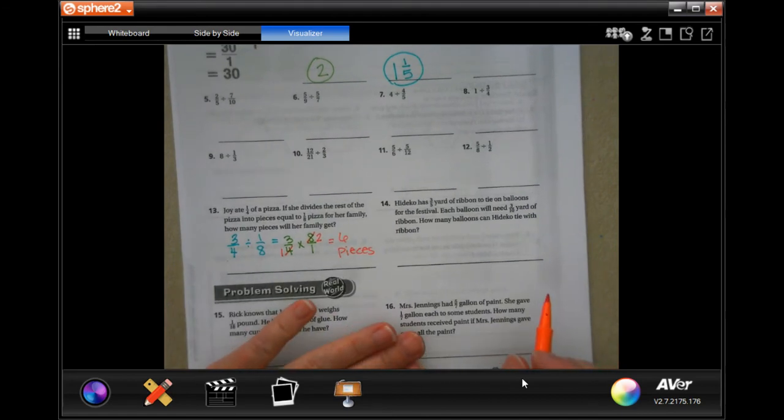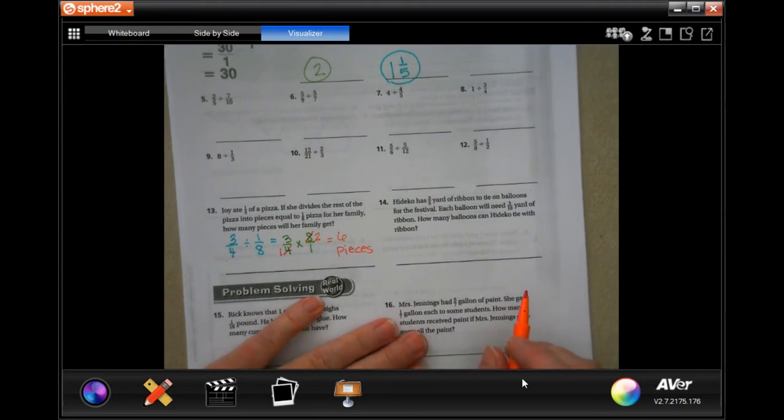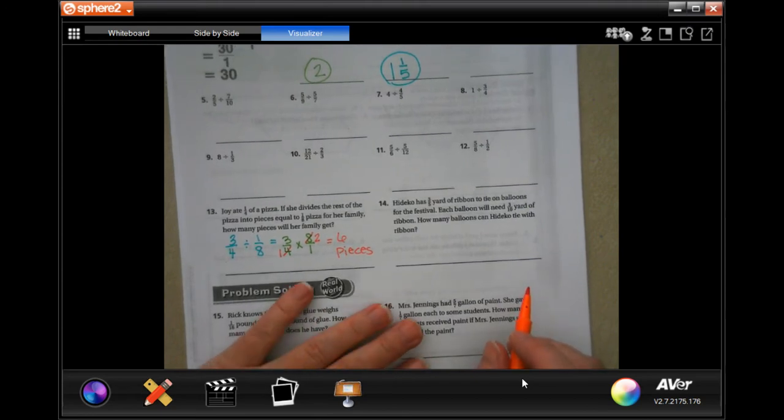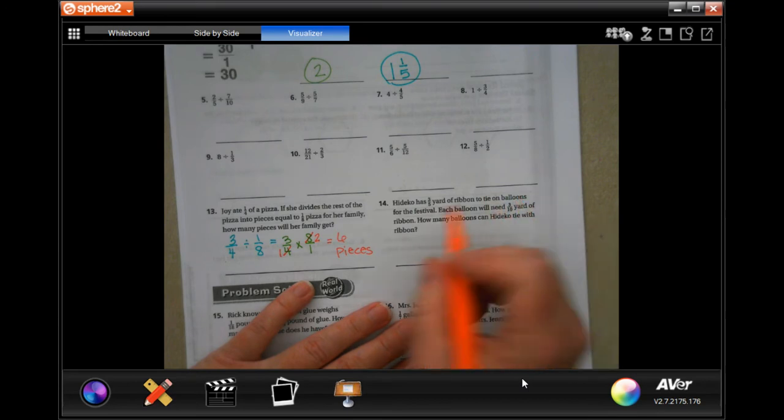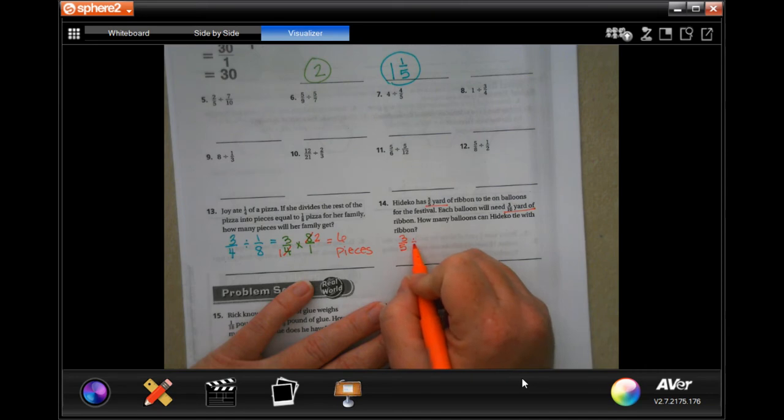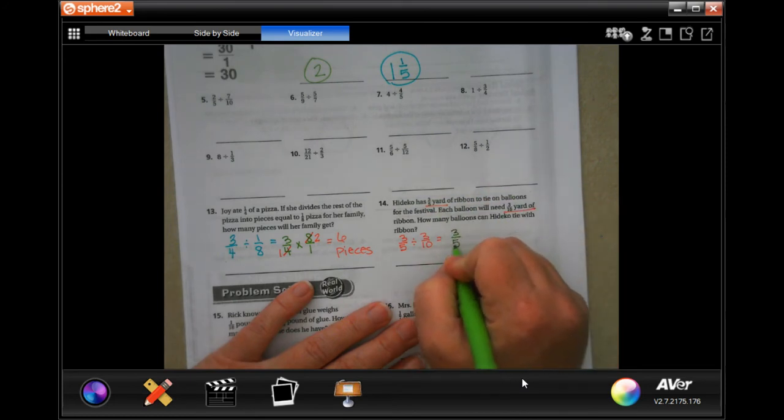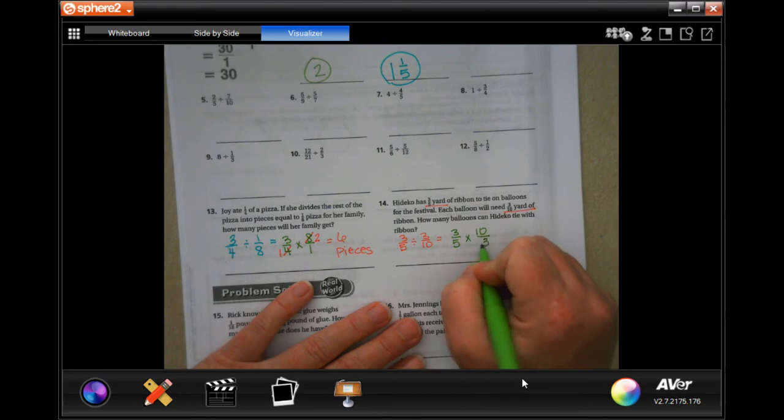Kadeco, I'm guessing, has three-fifths of a yard of ribbon to tie on balloons for the festival. Each balloon will need three-tenths of a yard of ribbon. How many balloons could she tie with a ribbon? So three-fifths is what she has. That's how much she has. She needs three-tenths for each one. So now I keep, I change, I flip.